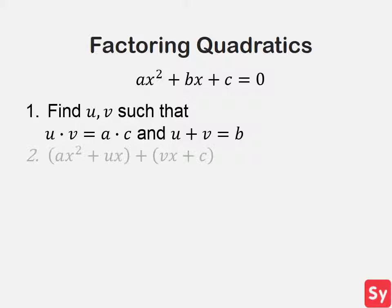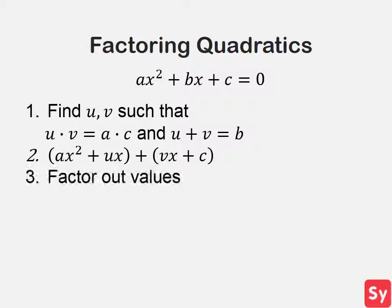Next, we can rewrite the equation as a times x squared plus ux plus vx plus c. Then we will factor out any values if possible. This will allow us to get its two factors.